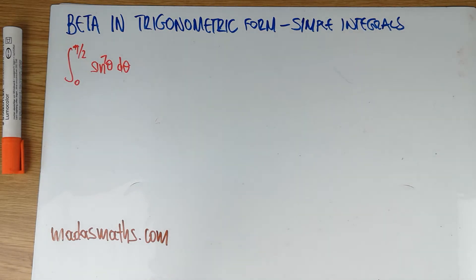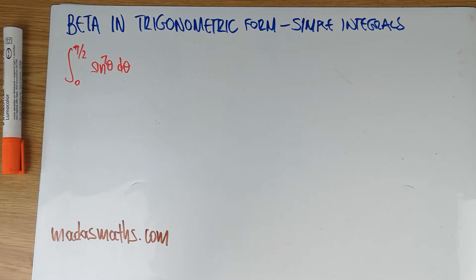Hello and welcome. Today is going to be some more practice with the beta function in trigonometric form. A few simple integrals just to actually see the trigonometric form, which I'm going to write. Perhaps I should really write this somewhere on the side. Let me see a decent colour pen. Let's say we use an orange pen.